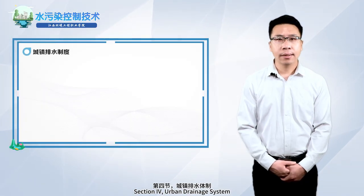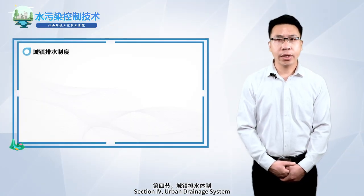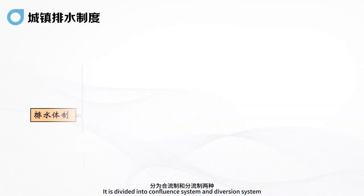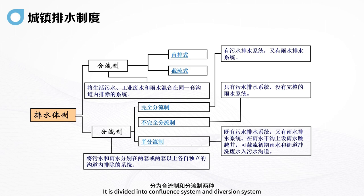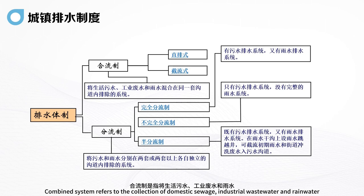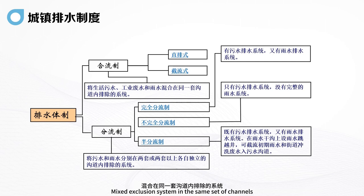Section 4: Urban Drainage System, divided into combined system and diversion system. The combined system refers to the collection of domestic sewage, industrial wastewater and rainwater in the same set of channels — a mixed exclusion system.